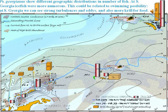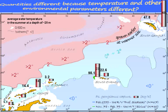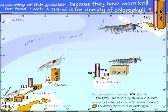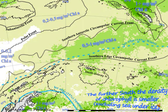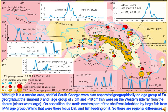Georgianus shows different geographic distributions in fish numbers. At South Georgia, ice fish were more numerous, possibly related to swimming possibility — strong turbulences and eddies and more krill for food are present there. Closer to the continent, catch dropped twofold on research vessel Professor Siedlecki. The quantity of fish is greater where more krill food is available. Southward, chlorophyll density decreases. Georgianus catch from 1975 to 2012 confirmed a trend: catch became seven times smaller in the direction toward the continent. The shelf of South Georgia was also geographically separated by age group.